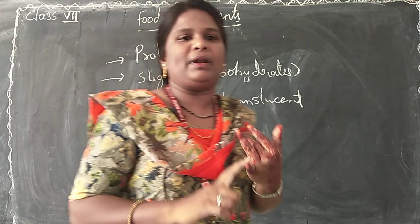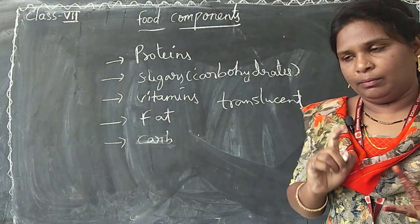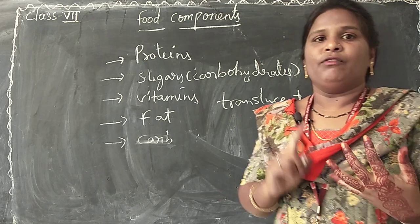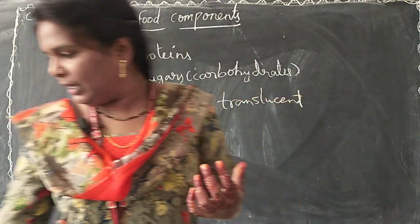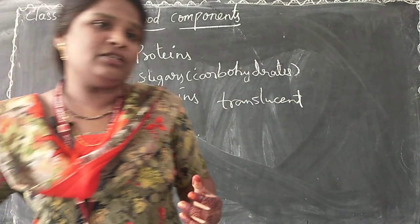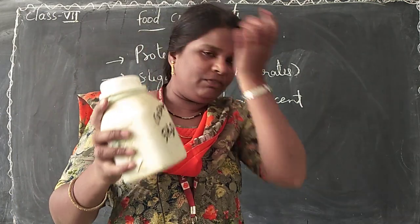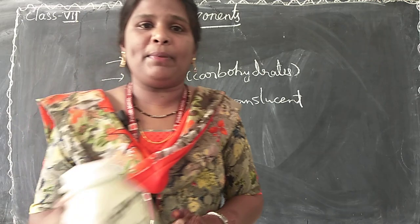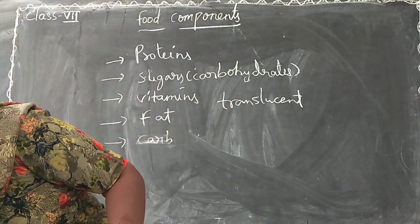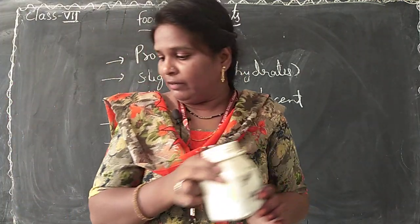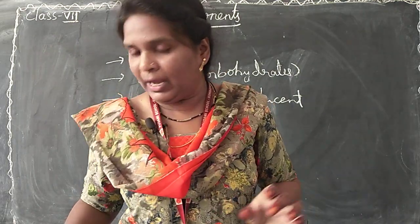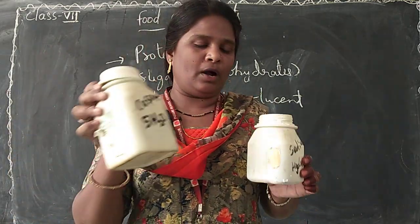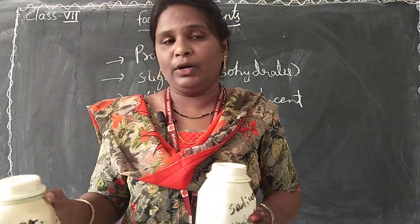Proteins are mainly present in meat and egg — proteins are present in those. For the protein test, we also have one experiment. For that we require copper sulphate and sodium hydroxide. With these two components we make a solution, and we require them for doing the protein test.